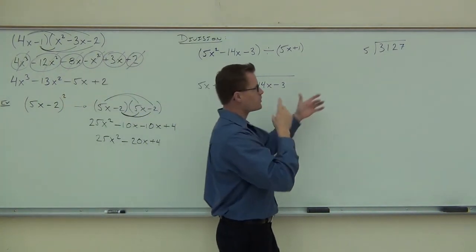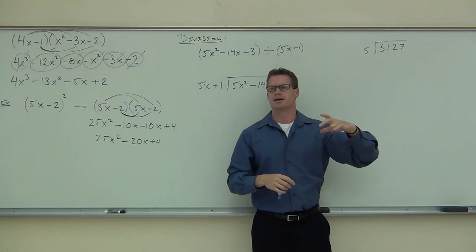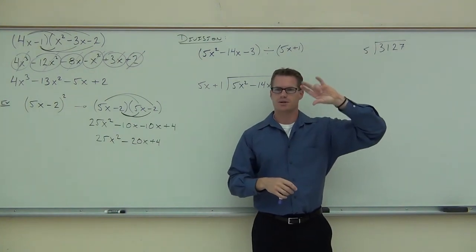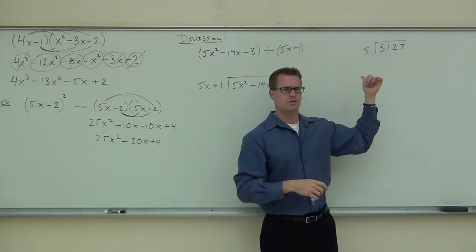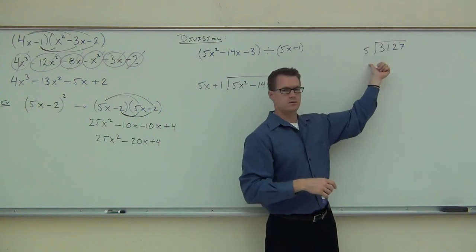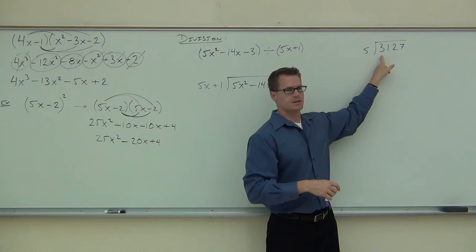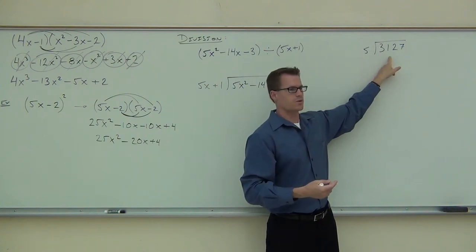Now here's the idea. In this problem over here, what we would do is we'd say, okay, how many times does 5 go into, what would we look for here? Yeah, we'd check for the 3, right? But that doesn't happen. So we'd go for the next 2, we'd go 31.